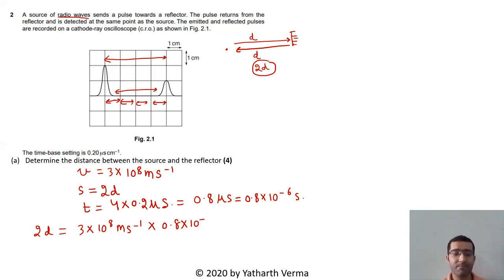Seconds get cancelled, so 3 × 0.8 which is 2.4, and then 10^8 minus 10^-6 is 10^2 meters, which is equal to 240 meters. So 2d is 240 meters, d is equal to 240 by 2 which is 120 meters. Meaning the distance between the source and the reflector is 120 meters. The wave went 120 meters, came back 120 meters, the total was 240 meters.